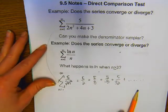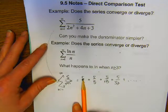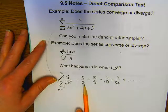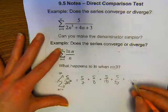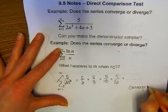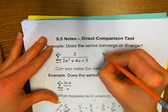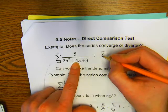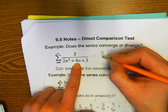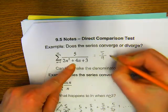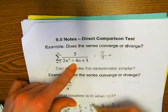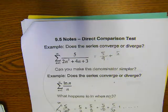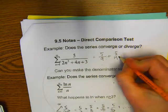We know that 5 over 2n squared converges since its terms are getting smaller. Now writing out the terms of our given series: for n=1 we get something less than 5/2; for n=2 the term is 5 over 19, which is again smaller. Since our series is smaller than 5 over 2n squared, which we know converges, this series also converges.